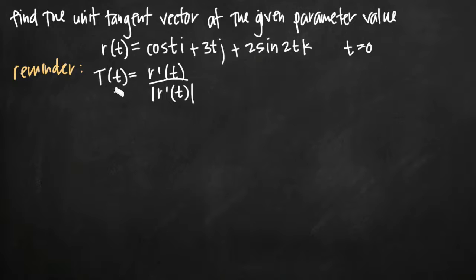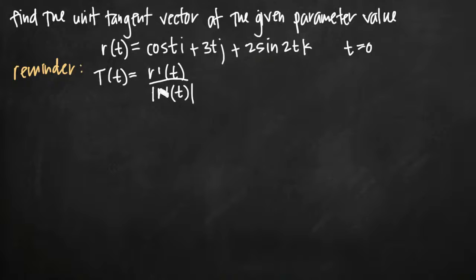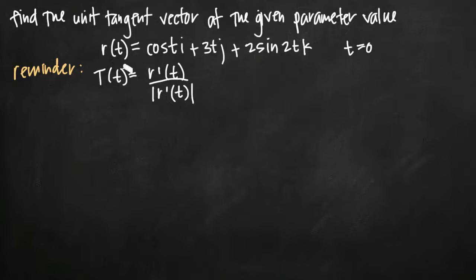As a reminder, the formula we're going to use gives us the unit tangent vector T(t). The unit tangent vector is tangent to our curve in space and is only one unit long, just like a unit vector. We'll be using this a lot later for finding things like curvature and other values in vector calculus. The value we're going to calculate is capital T of zero, the unit tangent vector at parameter value t equals zero.